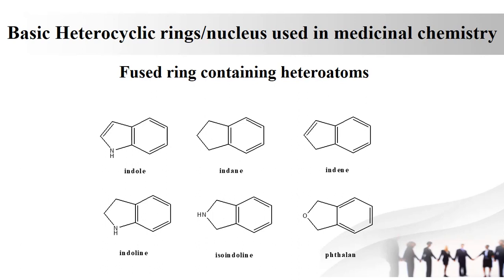Next one is indoline. In indoline, a benzene ring is fused with a wholly saturated pyrrole. Next one is isoindoline. Isoindoline is the same as indoline but the position of nitrogen in the pyrrole ring is changed. The drug chlorthalidone contains the isoindole ring.